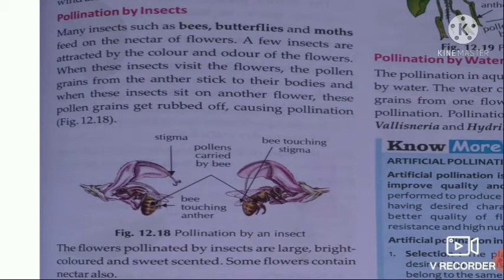In this manner, insects help in pollination. The flowers pollinated by insects are large, bright colored, and sweet-scented, because the flowers produce nectar. Some flowers contain nectar to attract insects.